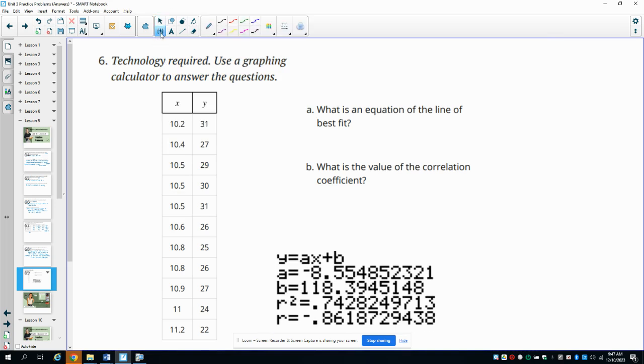And this one is not telling us how many decimal places it wants us to use. So I'm just going to use two decimal places. So then we would do Y equals and we put this A value in front of the X. So negative 8.55X and then the B value. So then plus the B value of 118.39.